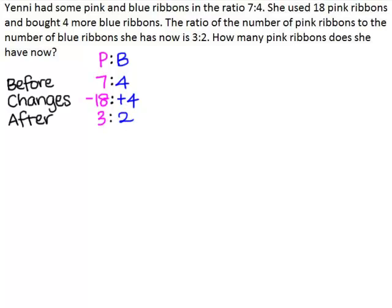This is a ratio question where all the elements change. The number of pink ribbons has changed, the number of blue ribbons has changed, the total number of ribbons has changed, and the difference between the pink and blue ribbons has changed.